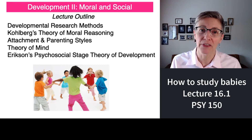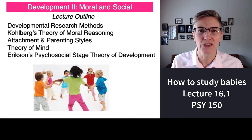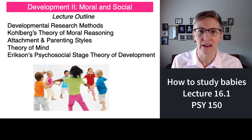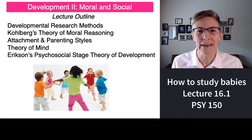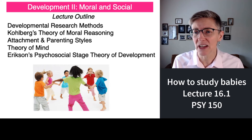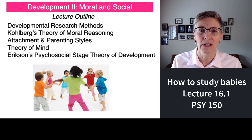Then we'll talk about the development of moral reasoning. The next step will be to talk about the development of our relationship styles. Then we'll talk about theory of mind. And if we have time, finally we'll discuss Eric Erikson's theories of how we develop as psychological social beings.